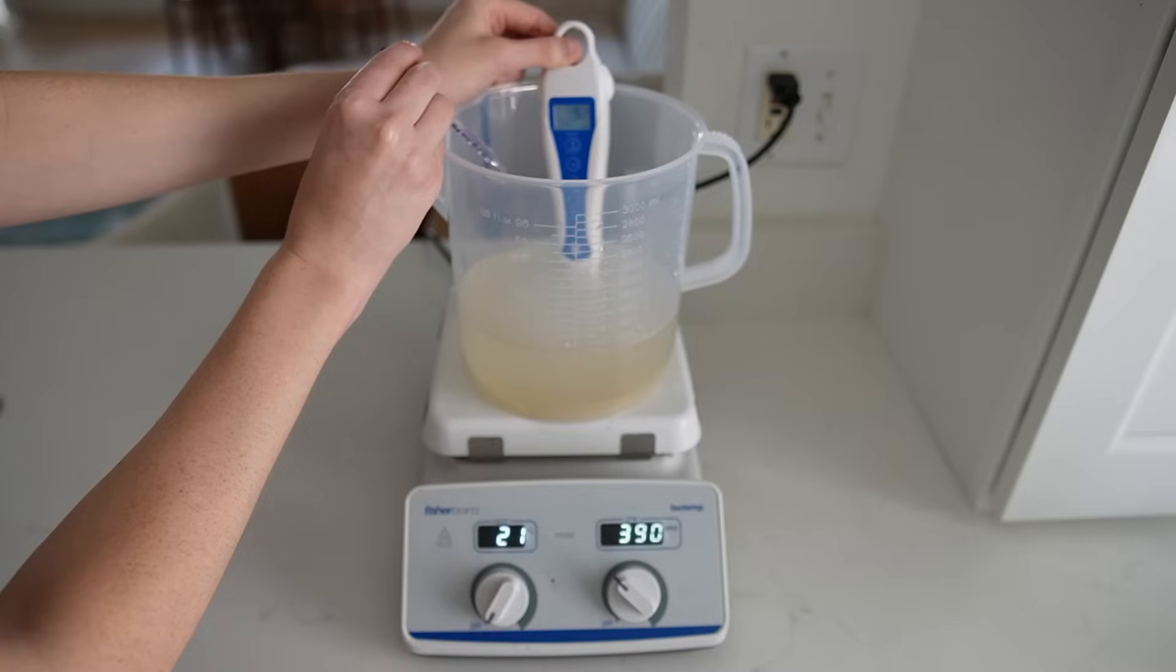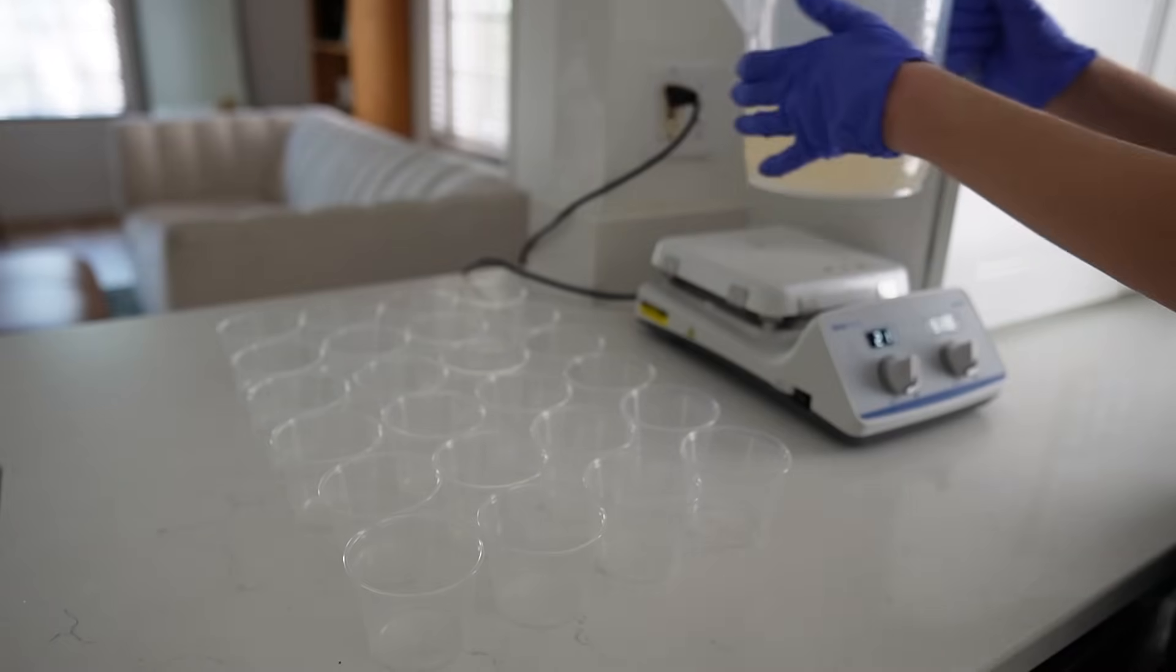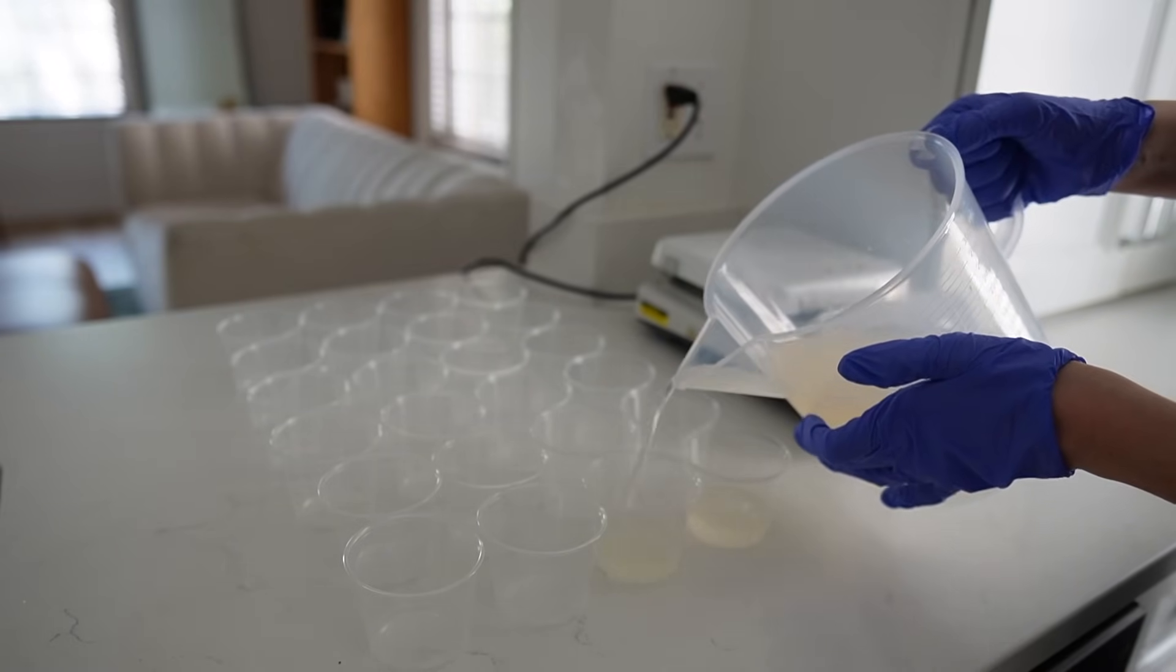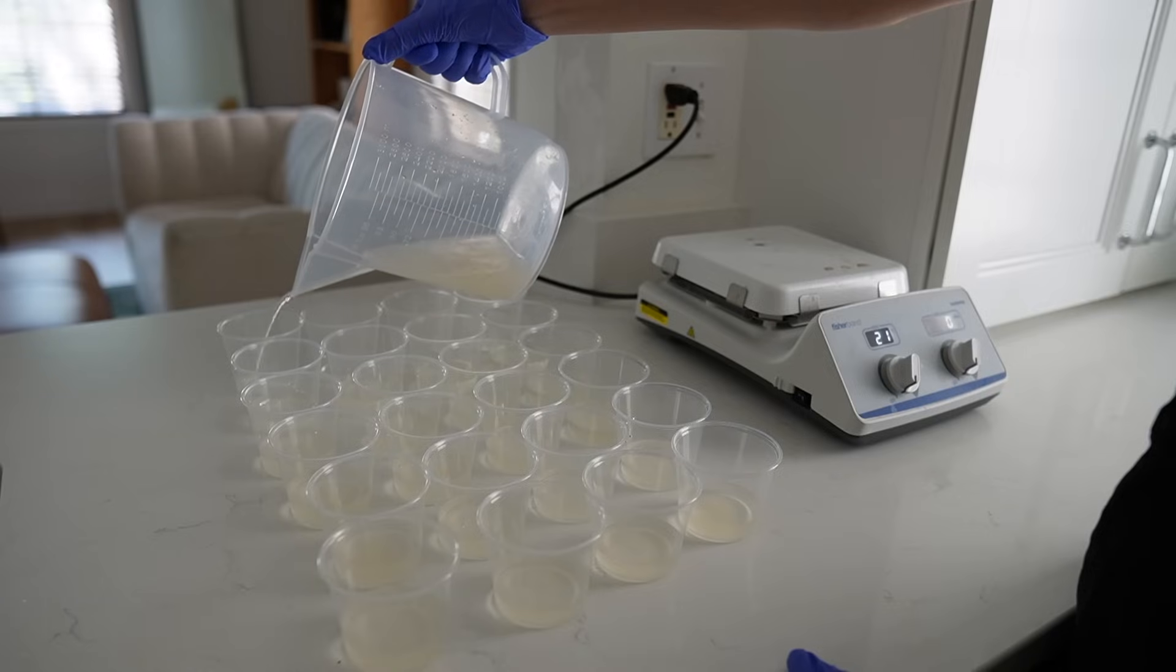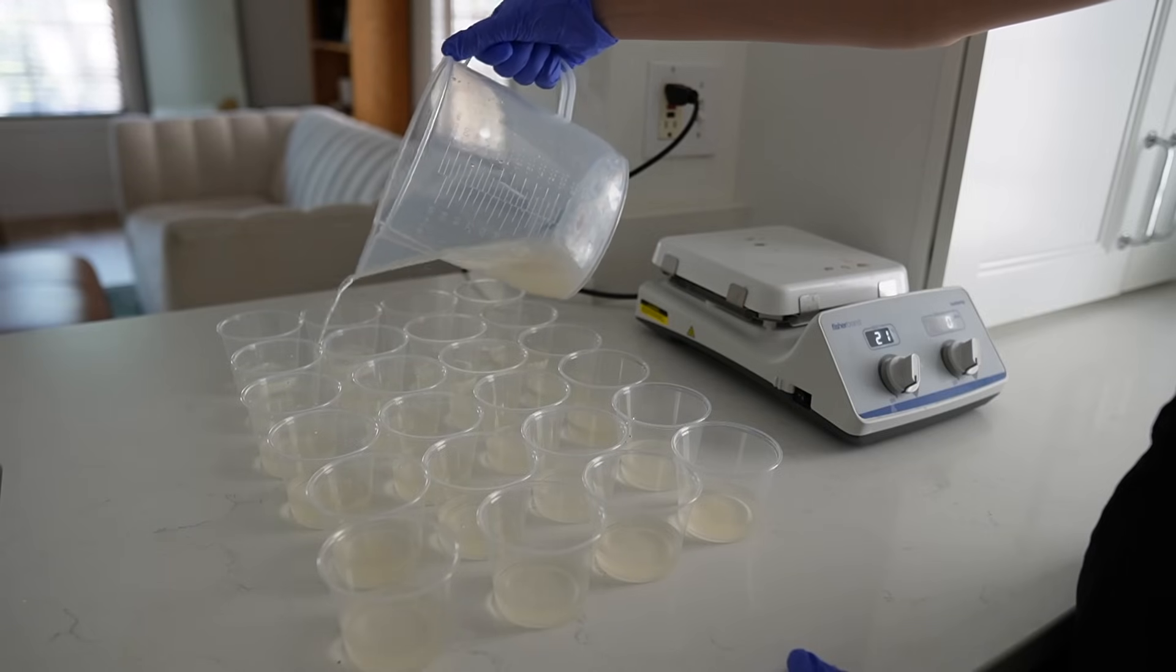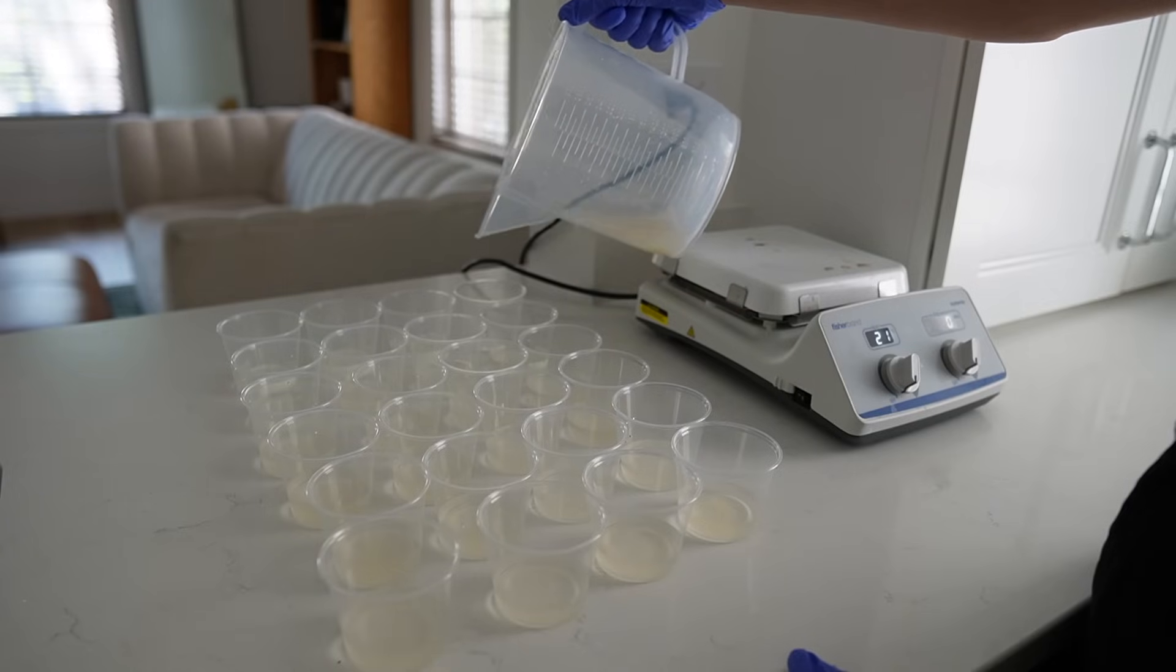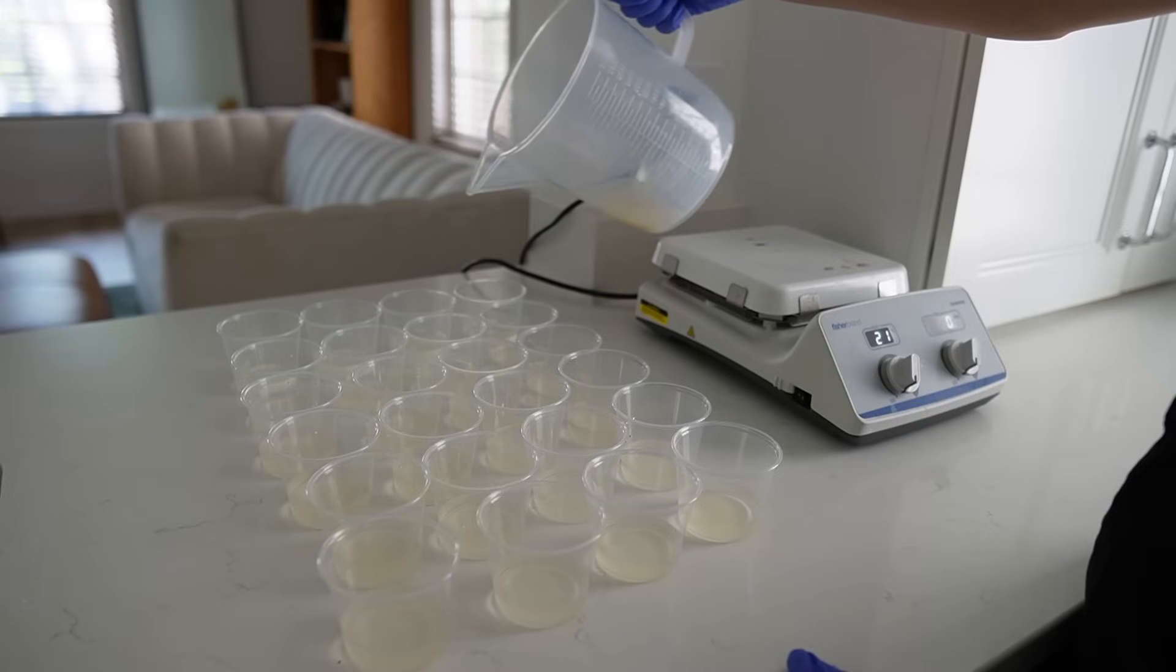With a calibrated pH probe, I adjust the pH to 5.7 using some hydroponic up solution. And after that, the media gets poured individually into polypropylene containers. I'm going to be sterilizing these in a pressure cooker. In past videos, I've recommended a microwave, but it's just not nearly as effective at sterilization when compared to the pressure cooker.